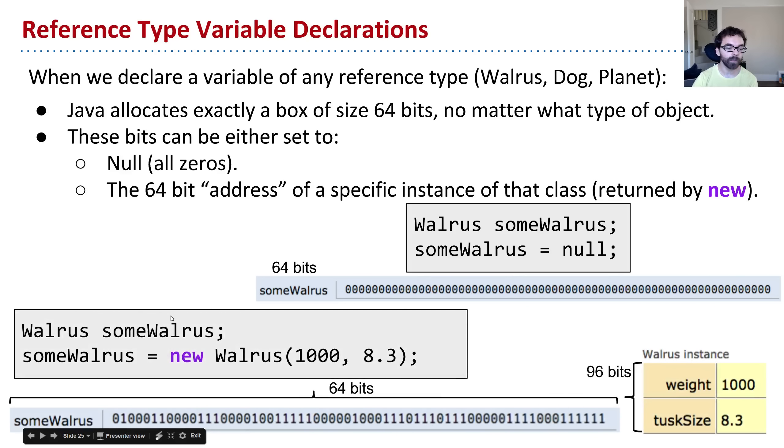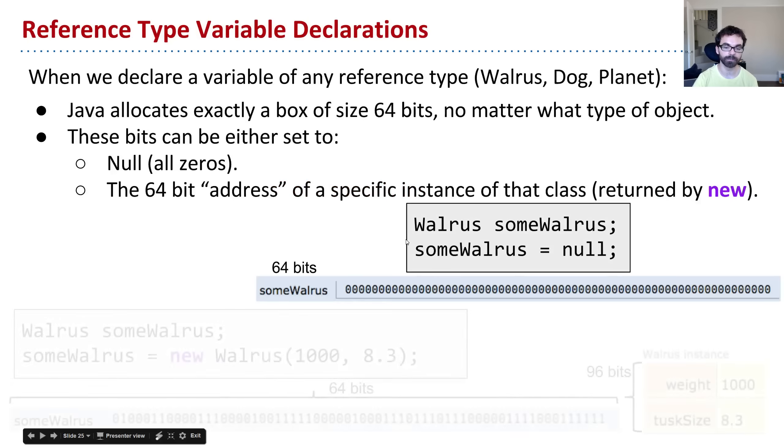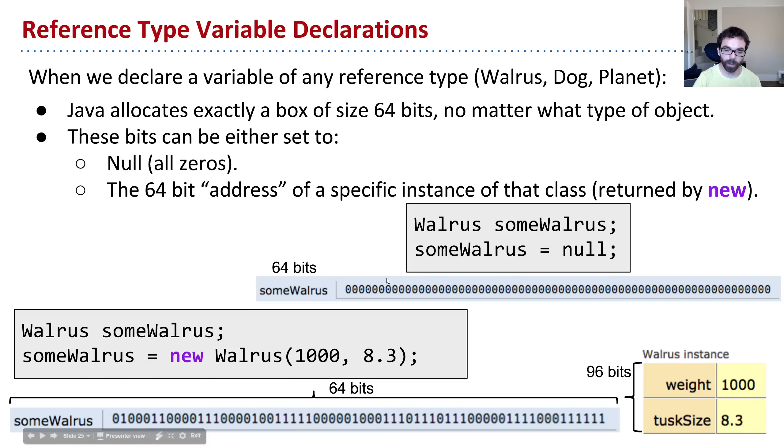By contrast, if I say walrus someWalrus, that creates a box of 64 bits, and then say equals new walrus, then what's going to happen is that after new goes out to the field and digs the hole and puts the delicious, delicious walrus, that's not nice, our lovely walrus in the field, and then shouts, here's the location of the walrus. This serves as a record of that information. So if it got put in location 0, 1, 0, 0, 0, 1, 1, yada yada, that is going to be what we store in this box. So even though the walrus itself is 96 bits, the address that we store is 64 bits. And it's just in a modern Java runtime environment, 64 bits is the size of the address. That's how many bits we use to represent this number right here.